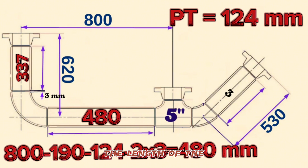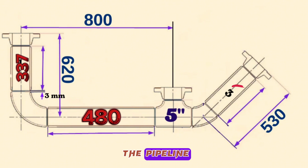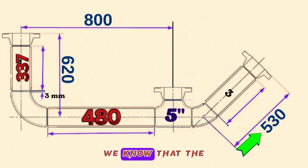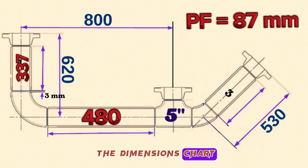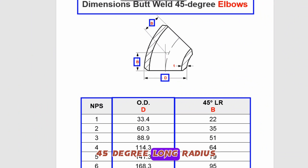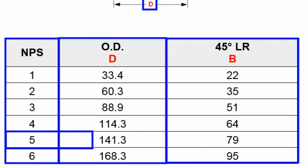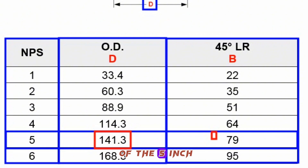Now let's calculate the length of the 5-inch pipe piece Item 3, used in the fabrication of this pipeline. In this section, the total distance from the center of the 45-degree butt weld elbow to the face of the weld neck flange is 530 millimeters. We already know the 5-inch weld neck flange length is 87 millimeters. Looking at the 45-degree long radius butt weld elbow dimensions chart for the 5-inch row, the outside diameter is 141.3 millimeters and the center-to-end is 79 millimeters.